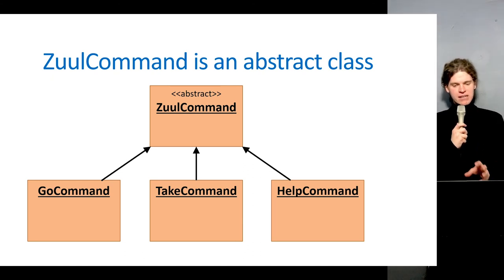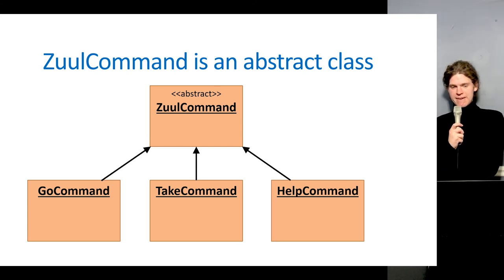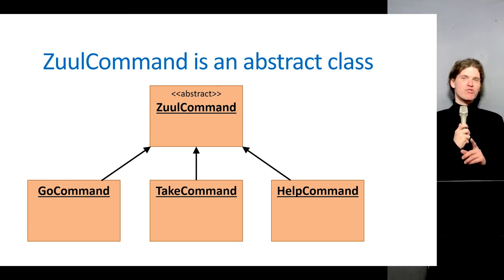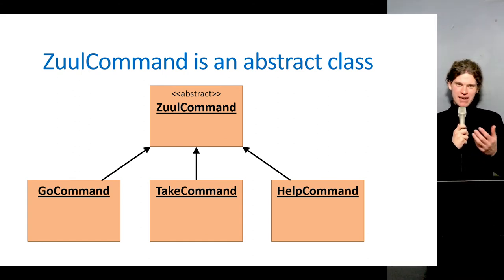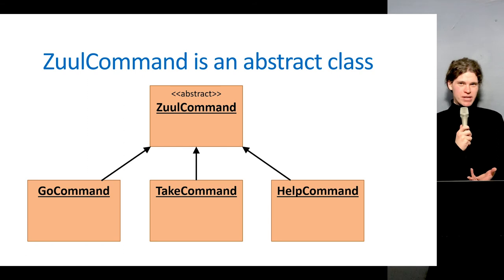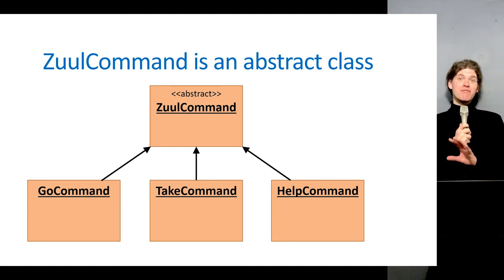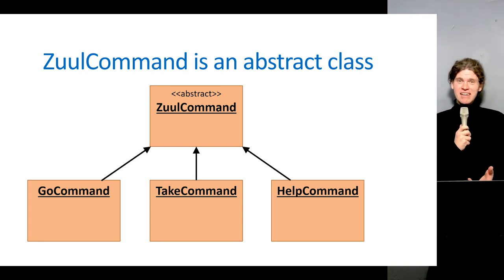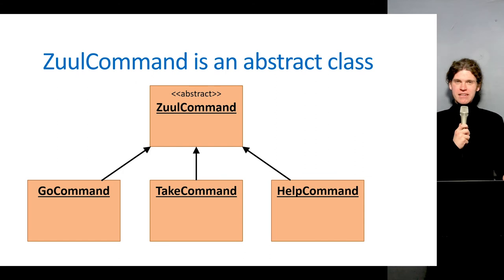ZoolCommand is abstract, so we create instances of GoCommand, TakeCommand, and HelpCommand. There's also an abstract method within ZoolCommand — another aspect of abstract classes. Abstract methods don't have an implementation, so the children classes provide the implementation for that.